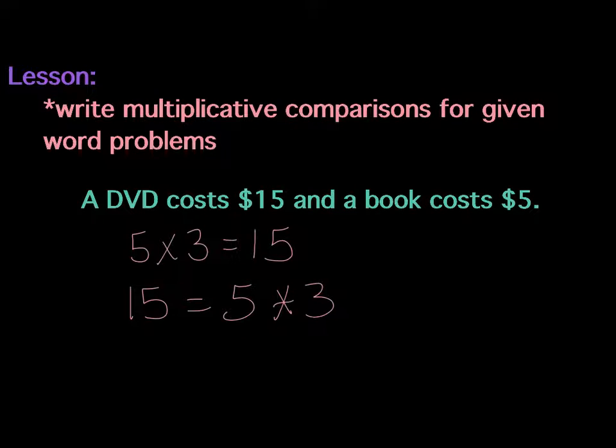Now, specific parts of each equation are going to represent specific parts of the situation or the model in the word problem. So what does the 5 represent in these equations? The 5 represents the cost of the book. The 3 represents the number of times more the DVD costs than the book. So what does the 15 represent? The 15 represents the cost of the DVD. So using multiplicative thinking behind our comparison, we can kind of figure out what's going on in this situation.